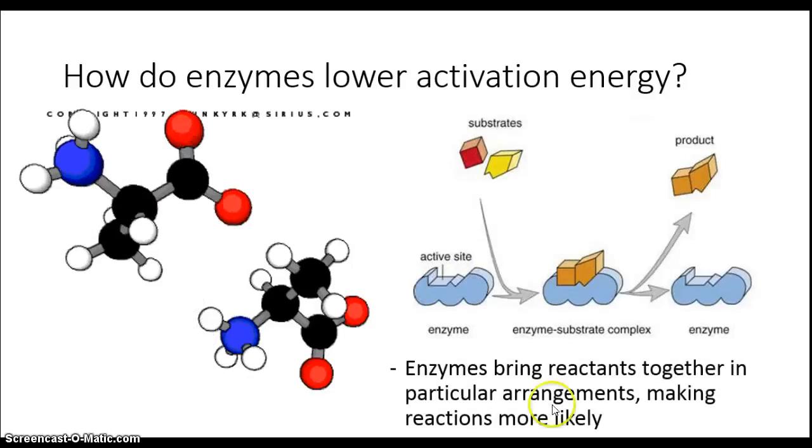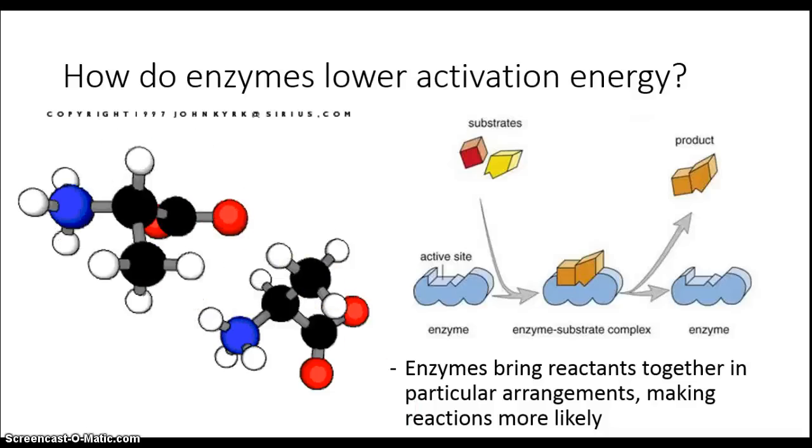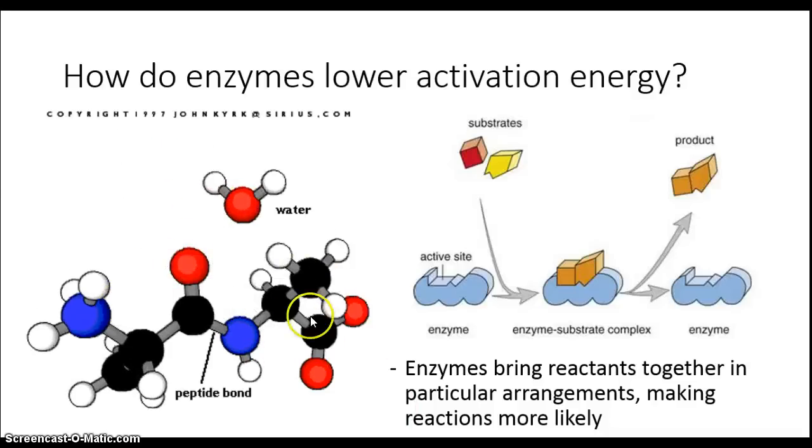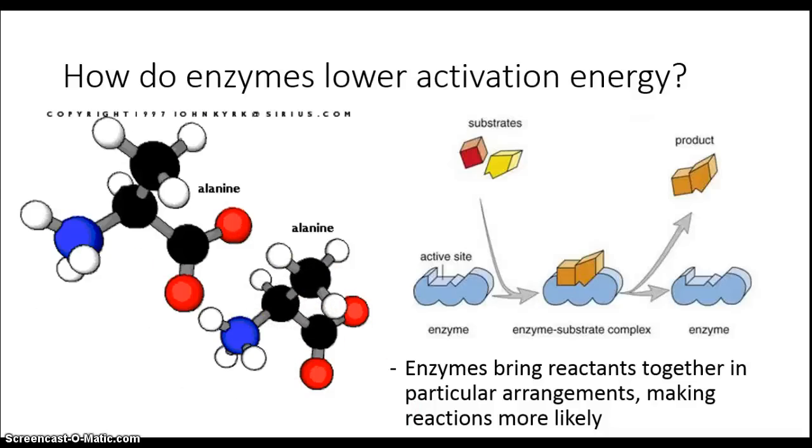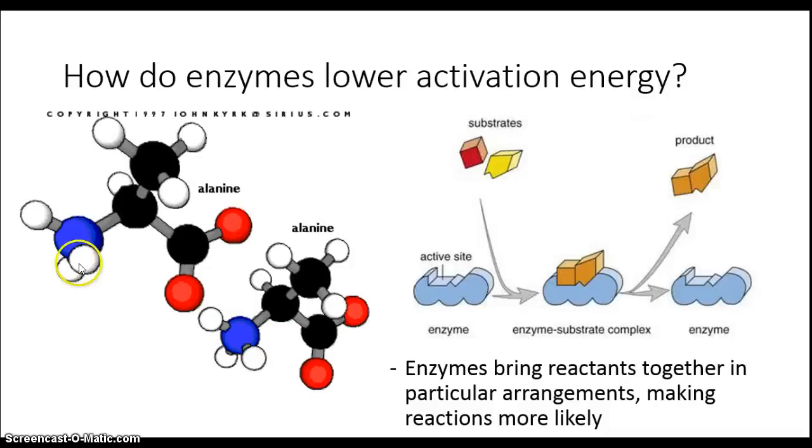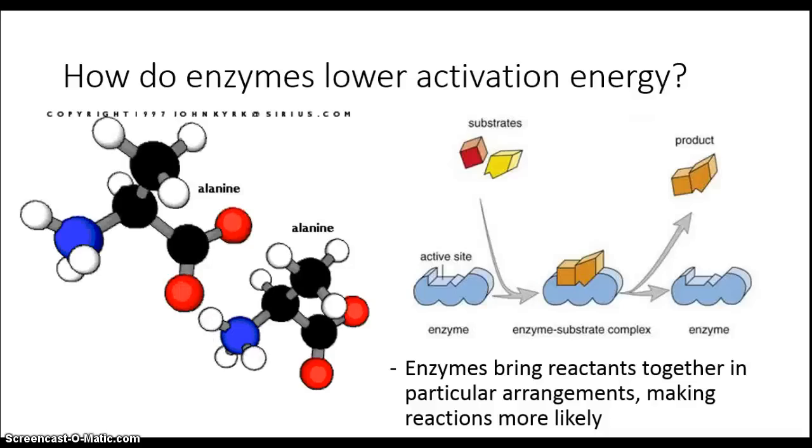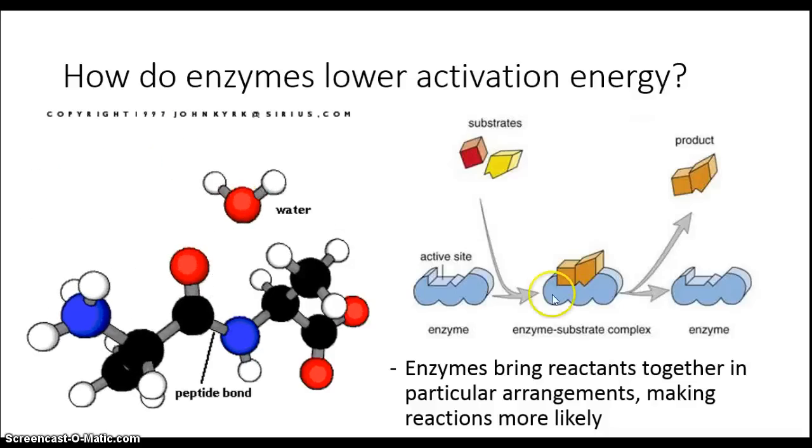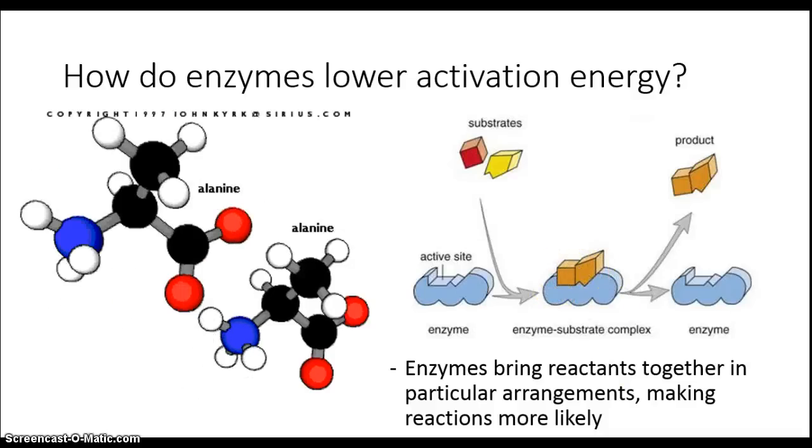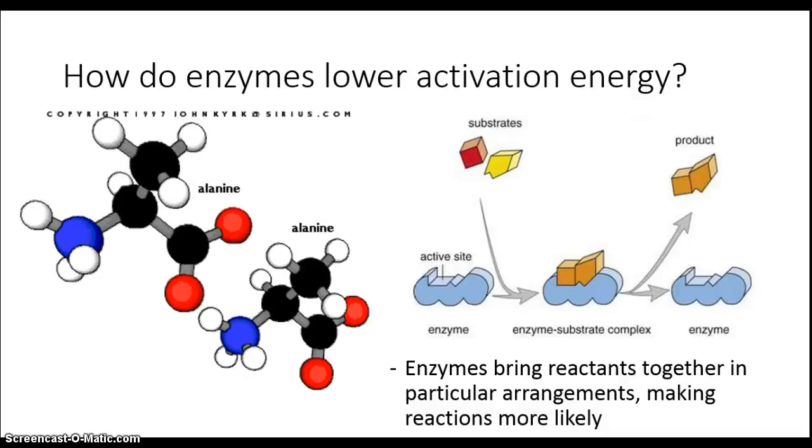What an enzyme does is it has a region where these molecules come together in their specific orientation that makes the reaction more likely to occur compared to otherwise. This reaction here may not happen because as these molecules are moving around in solution, they might bump in the wrong way. Let's say these two nitrogens bump into each other, rather than this carbon and this nitrogen. And as a result, it might not occur most of the time. But with an enzyme, an enzyme might bring these together in such a way that this reaction is going to happen.